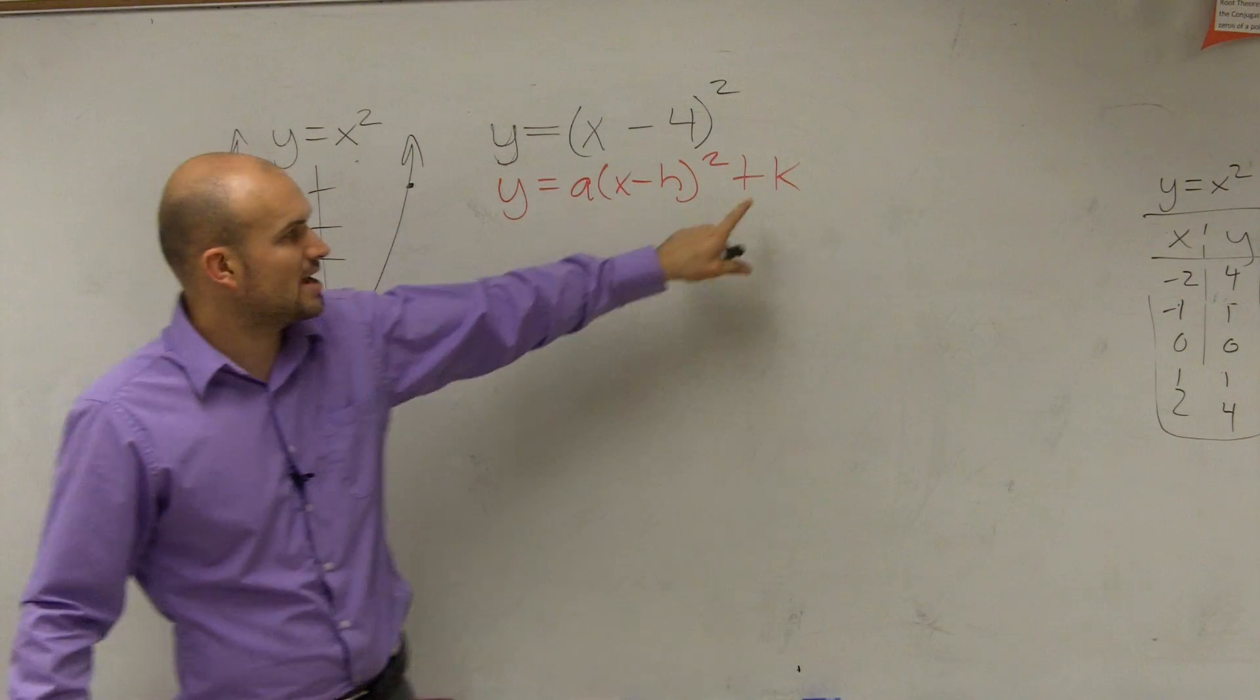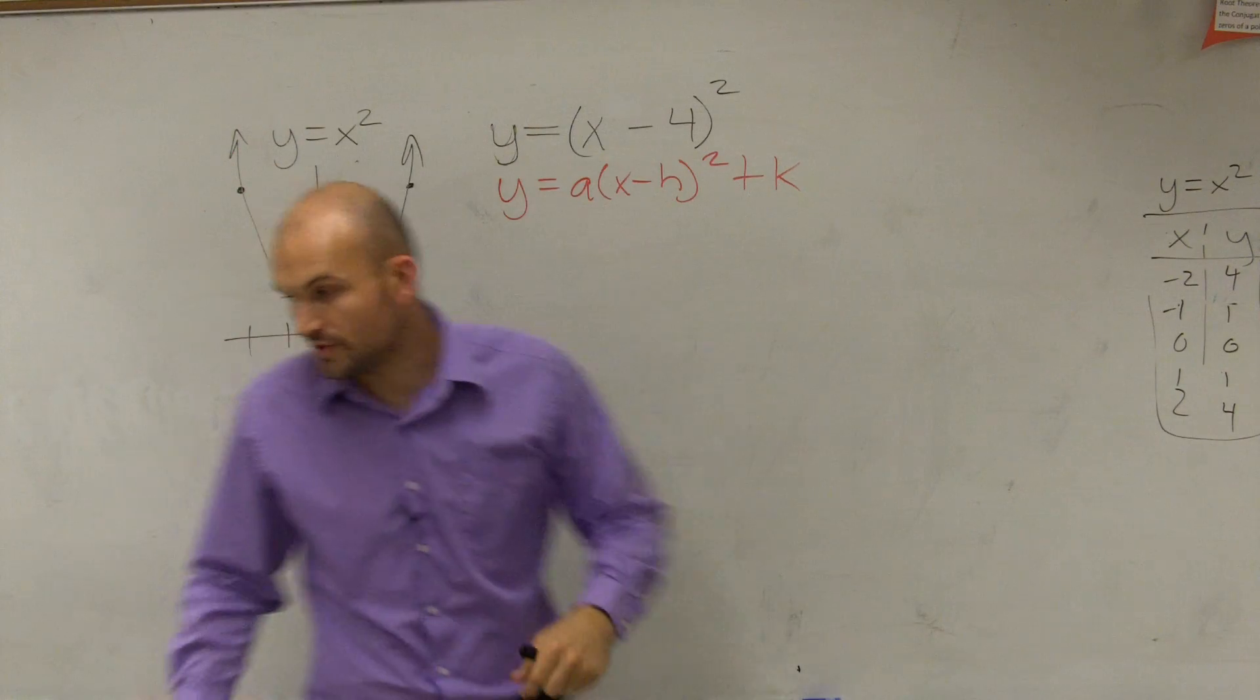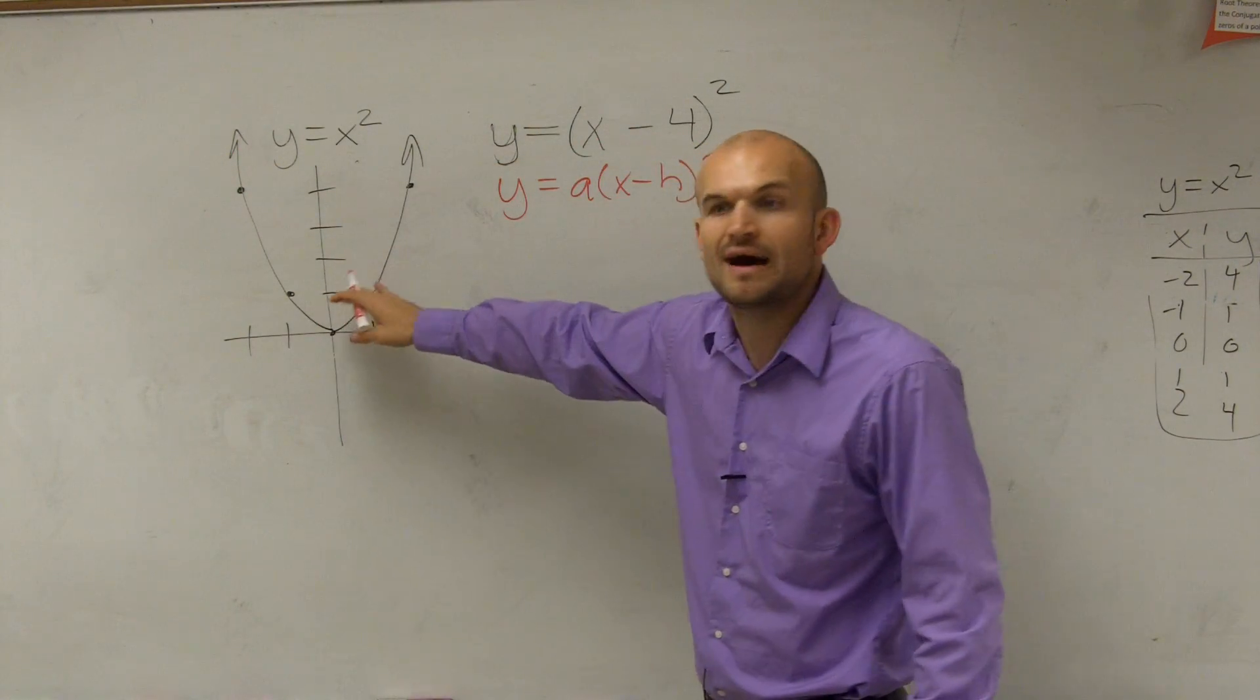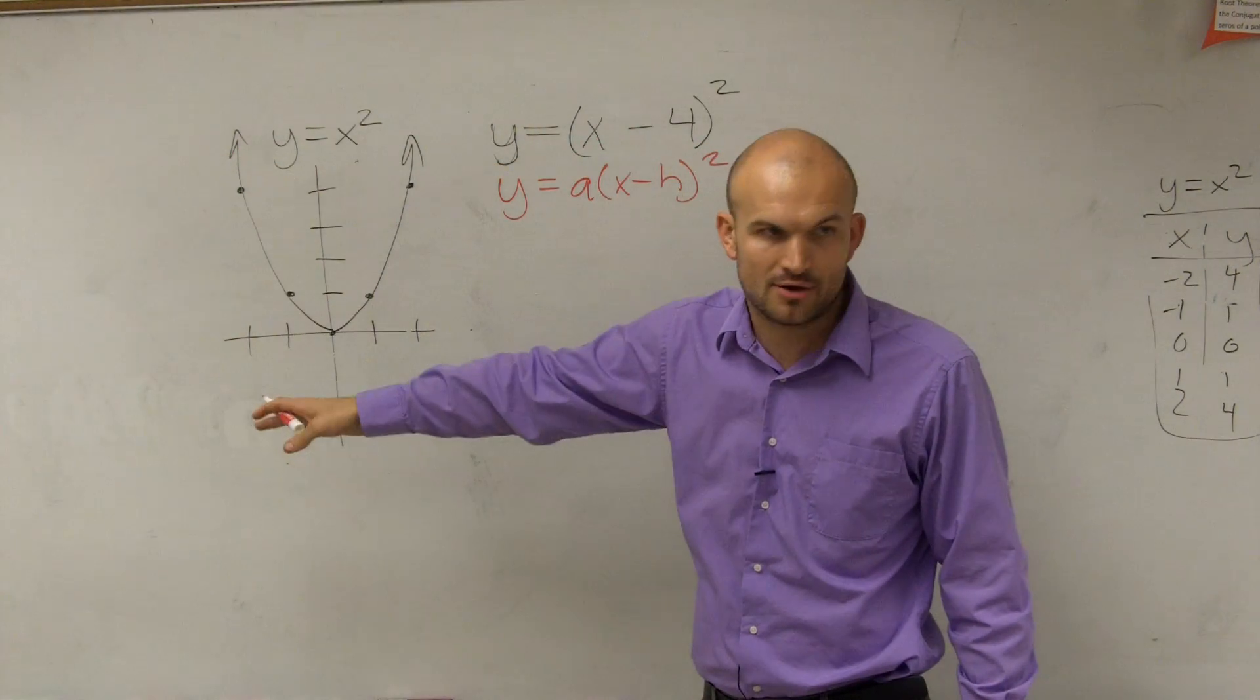Now, in this equation, do we have a k? No. So therefore, from my parent graph, I am not going to shift my graph up or down at all.